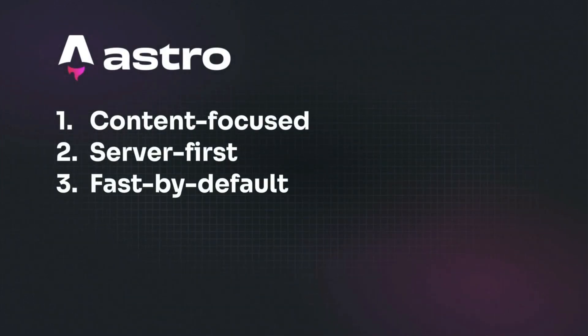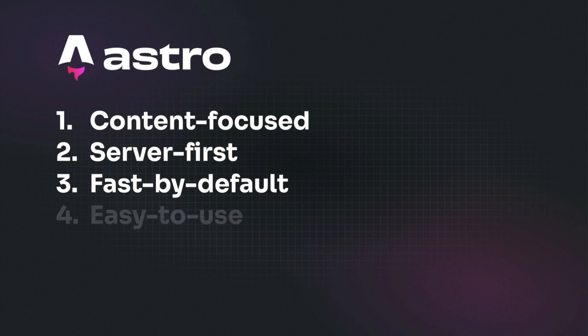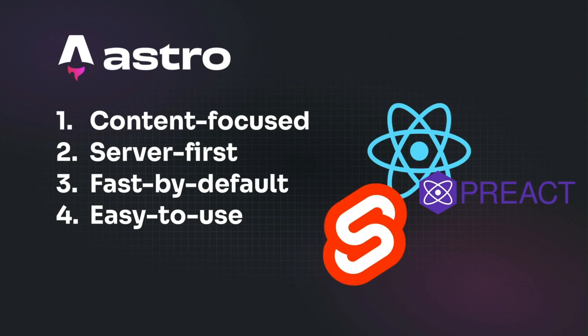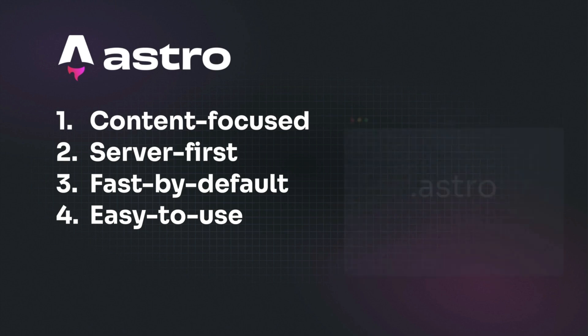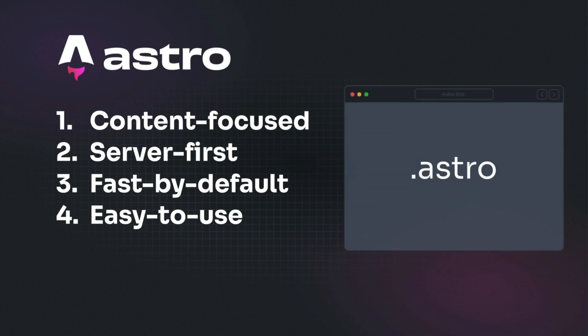Thirdly, it's fast by default. With Astro, building a slow website is honestly nearly impossible. It combines a content focus with the server-first approach to deliver exceptional performance. Fourthly, it's easy to use. You don't need to be an expert to use Astro — if you know how to write HTML, CSS, and JavaScript, Astro is the perfect place to start. However, if you have more complex needs, it supports popular UI component frameworks like React, Preact, Svelte, Vue, and much more. It also offers its own .astro UI language, which is easy to learn and has features borrowed from other UI frameworks.